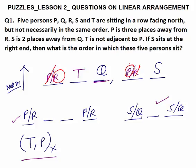The question asks for the order in which these five persons sit. The order would be R, T, Q, P, and S.